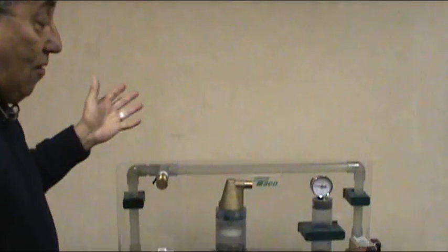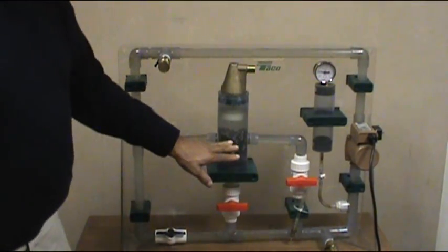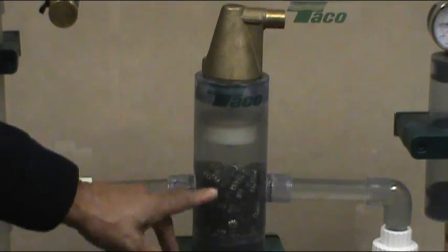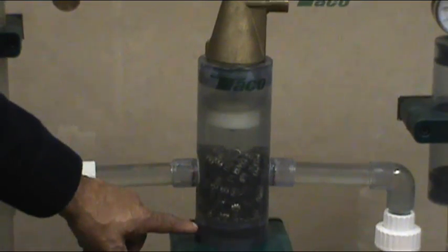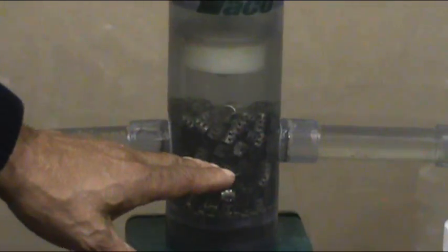Let's see what happens when we add a good quality air eliminator to our system. We're going to divert that flow from just circulating around and around through this model of the Tayco 4900 air eliminator. In the bottom of the barrel, you see the stainless steel pall rings that the air entrained water must go through to separate out.